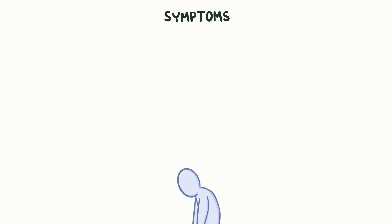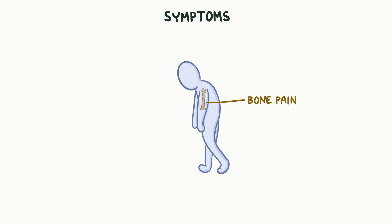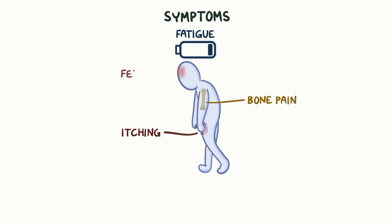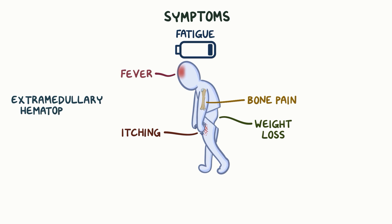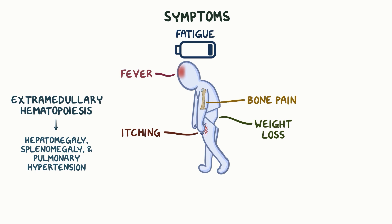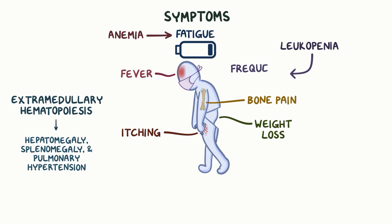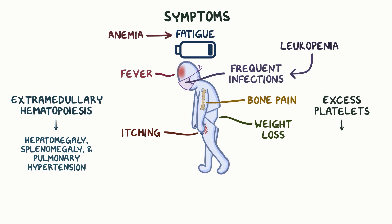Common symptoms of myelofibrosis are bone pain, fatigue, itching, fever, and weight loss. Sometimes the extramedullary hematopoiesis can lead to hepatomegaly, splenomegaly, and pulmonary hypertension. In addition, the anemia can lead to fatigue, and the low white cell count — leukopenia — can lead to frequent infections. The excess platelets can lead to thrombotic complications like deep vein thrombosis and pulmonary thromboembolisms.